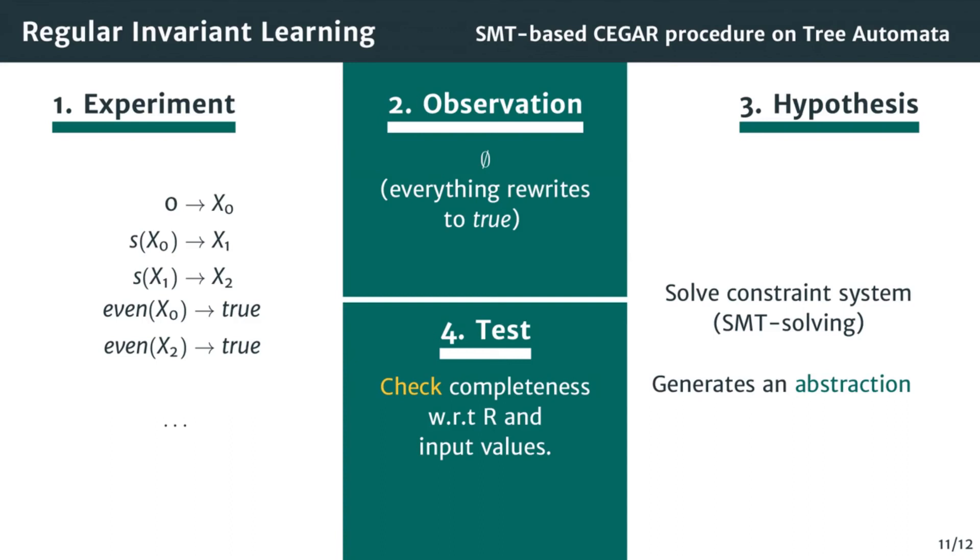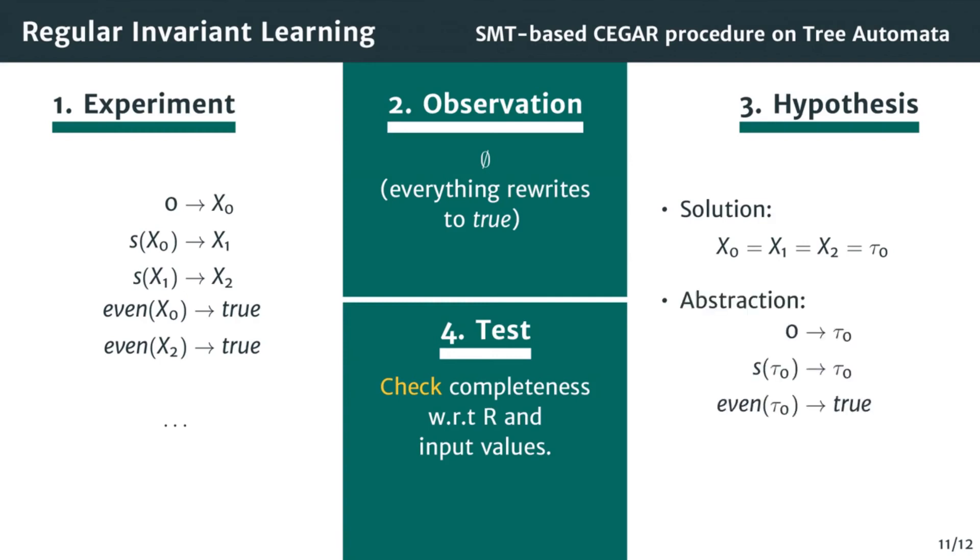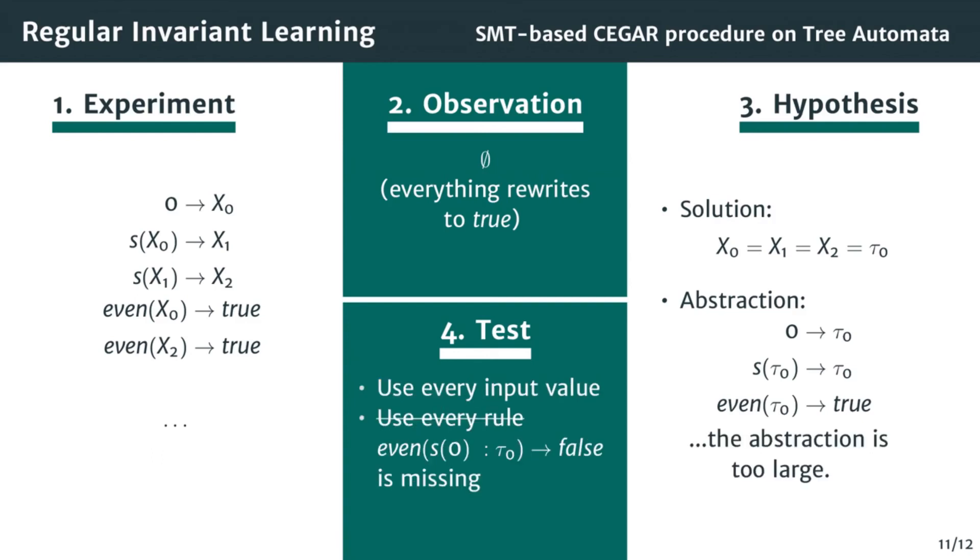A solution to our empty constraint system is to merge them together into a new state tau0. By applying this substitution in the automaton, we get a candidate abstraction for our rewriting system, where even, applied to any number, returns true. Of course, this does not pass the test. Every input value for even is represented, but some rewriting rules are not used. In particular, this abstraction misses the fact that even of 1 rewrites to false. So we cannot stop here.